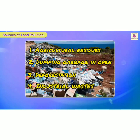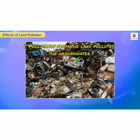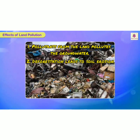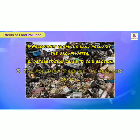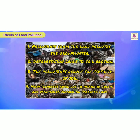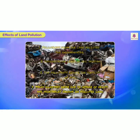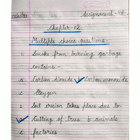So these are the causes of land pollution. The effects of land pollution are: first, pollutants from the land pollute the groundwater; second, deforestation leads to soil erosion; third, pollutants from land reduce the fertility of soil; and fourth, many illnesses arise due to intake of fruits and vegetables grown on polluted land. Now you have to do this work in your notebook today — write down today's date, chapter number, and then write multiple choice questions.